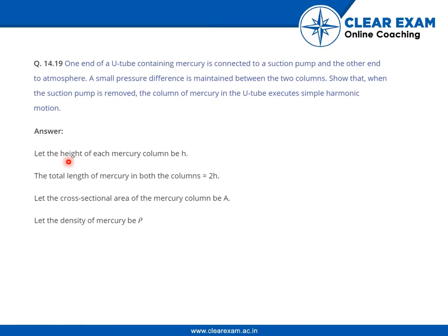Let the height of each mercury column be small h. The total length of mercury in both the columns is 2h. Let the cross-sectional area of the mercury column be A, and let the density of mercury be rho.